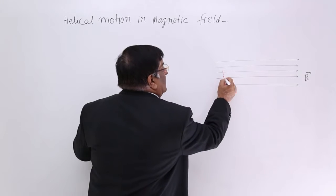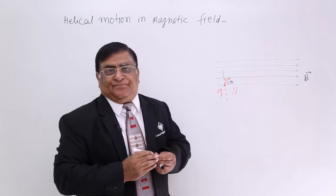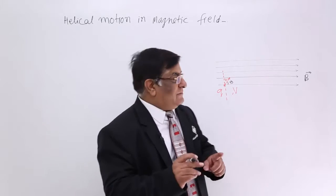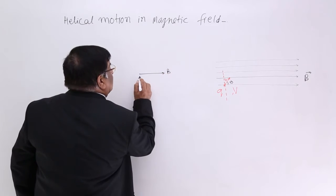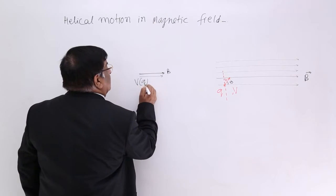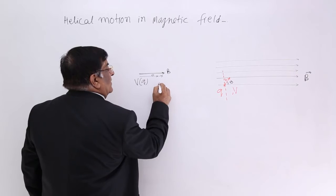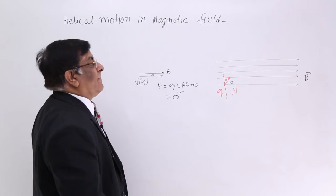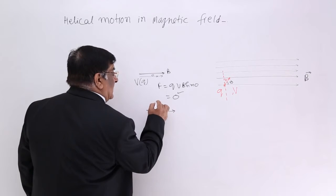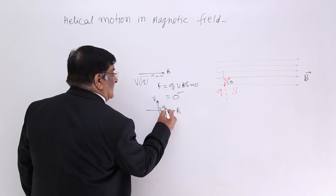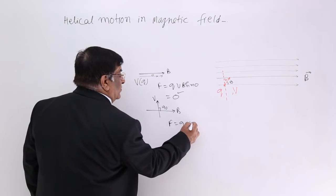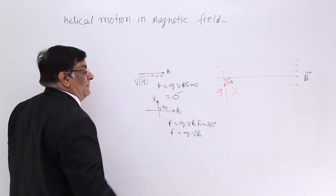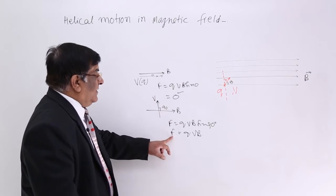This is velocity vector V. We know that if a charge is moving along magnetic field B, there will be no effect on it. If this is magnetic field B and this is velocity of the charge, then the angle between them is 0 and force on it will be QVB sin 0, which is equal to 0. So there will be no force acting on it. If B is in this direction and velocity is in this direction with an angle of 90 degrees between them, then force will be QVB sin 90. Sin 90 is maximum value 1, and force will be QVB.